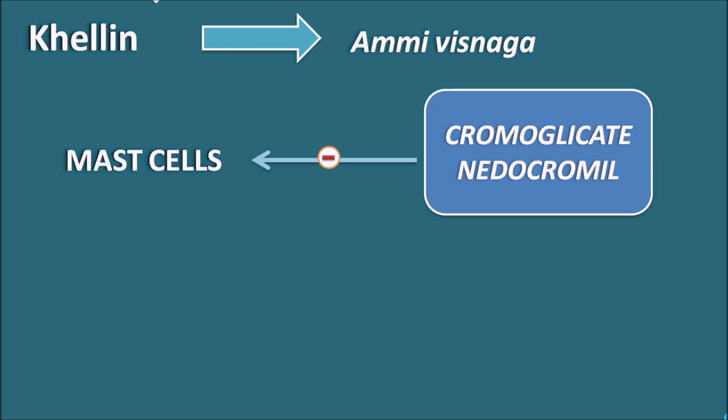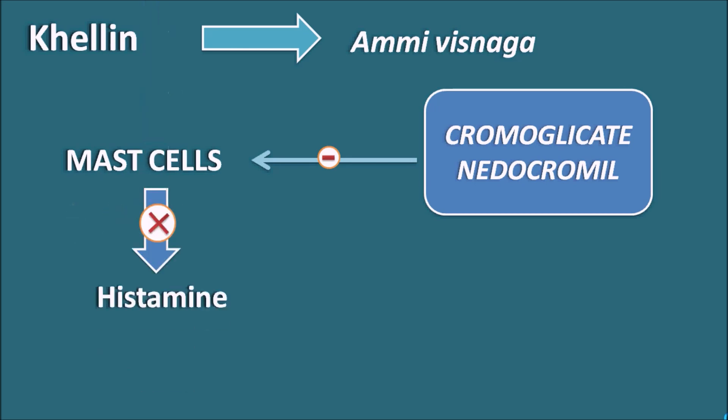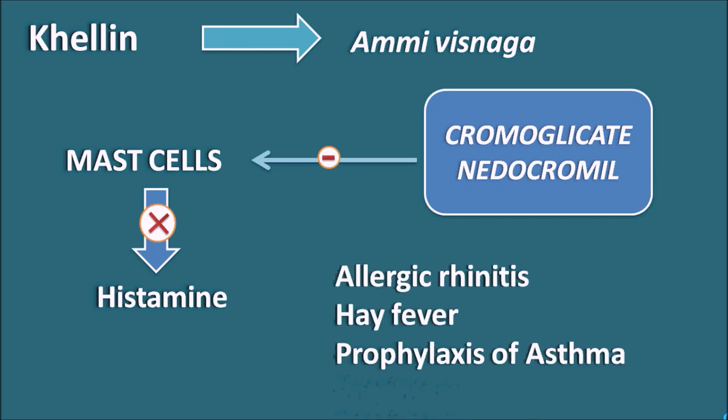When mast cells are not degranulated, they cannot release histamine. Histamine is an important inflammatory mediator, so inflammation can be controlled by cromoglycate and nedocromil. Even though these drugs are not antihistamines, they control histamine and are therefore called mast cell stabilizers. They are useful in the treatment of allergic rhinitis, hay fever, and in the prophylaxis of asthma.